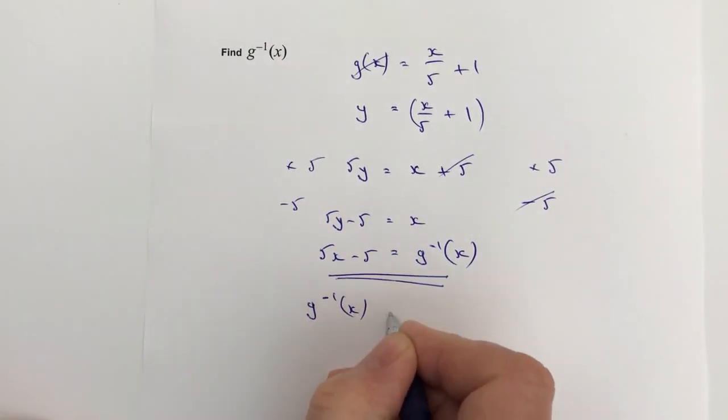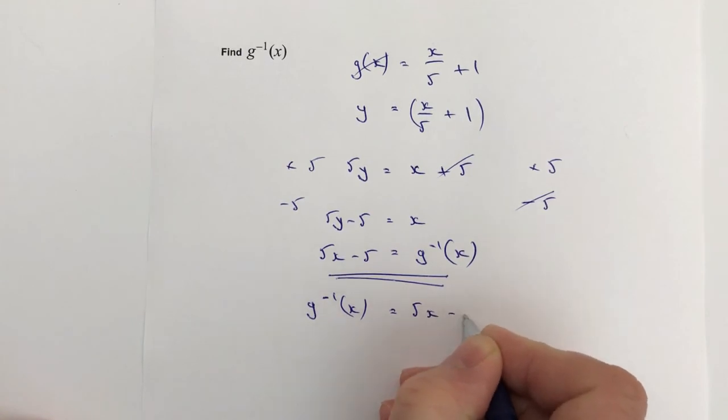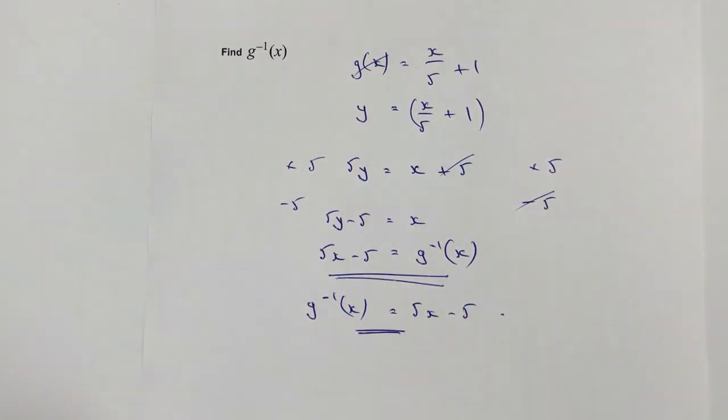So what I'm going to do is I'm going to write my full answer as g to the minus 1 of x equals 5x minus 5, and that would be the answer to my question. I hope that's okay for you, I hope it's been useful. Please do add a comment below if you're not sure, have a look at some of the other videos in the playlist, and I'll look forward to seeing you inside the next video.